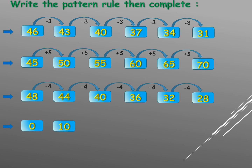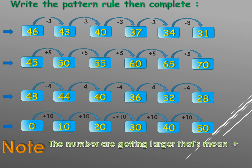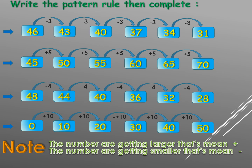The last one: zero becomes ten — the numbers increase, that means plus. The difference between zero and ten is ten. Our rule is plus ten. Ten plus ten equals twenty, twenty plus ten equals thirty, thirty plus ten equals forty, then fifty. Now the numbers are getting smaller — that means minus.